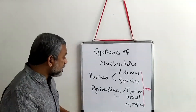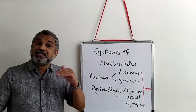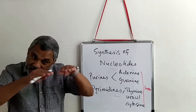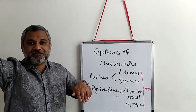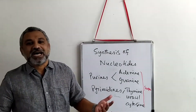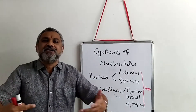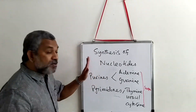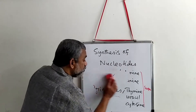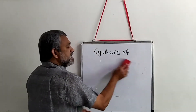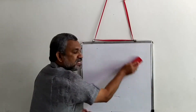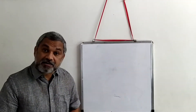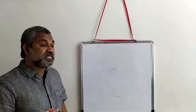In the synthesis of purines, the starting material is ribose. For pyrimidines, you need a carbon donor and a nitrogen donor rather than a specific starting material. The most important elements in purines and pyrimidines are nitrogen and carbon.